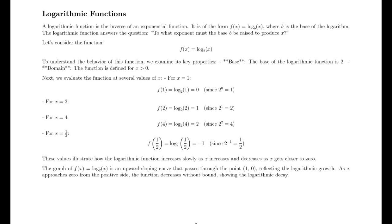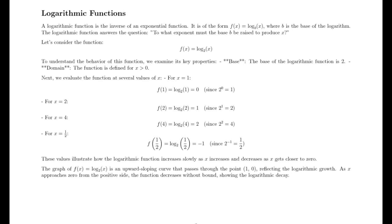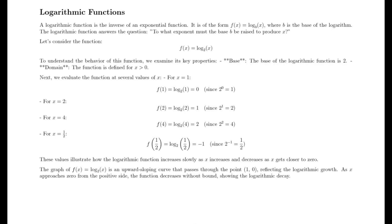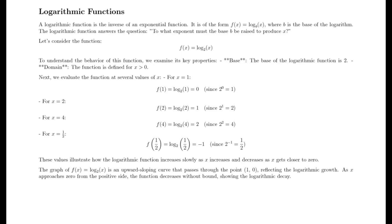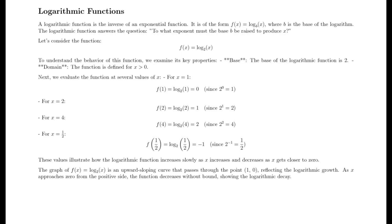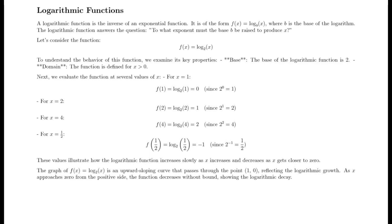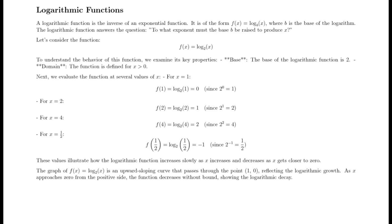These values illustrate how the logarithmic function increases slowly as x increases and decreases as x gets closer to 0. The graph of f(x) = log₂(x) is an upward sloping curve that passes through the point (1, 0), reflecting logarithmic growth. As x approaches 0 from the positive side, the function decreases without bound, showing logarithmic decay.